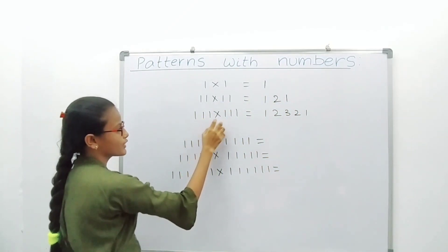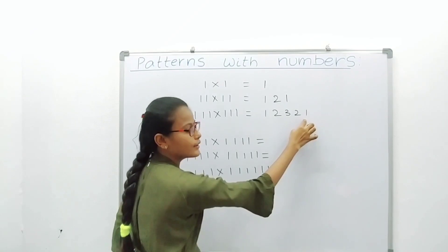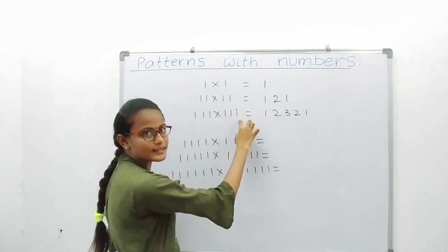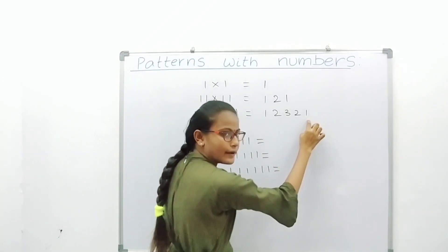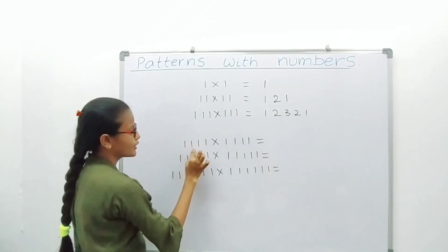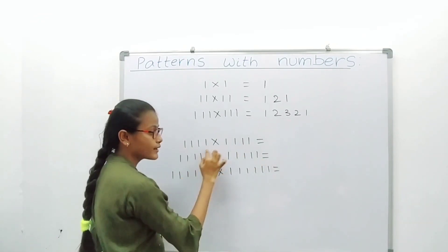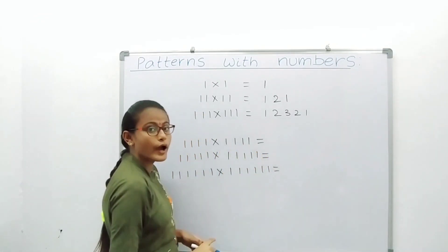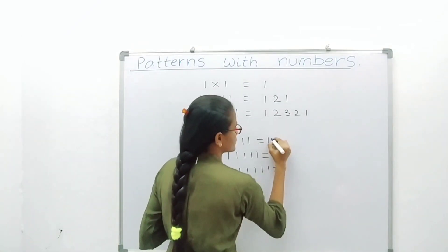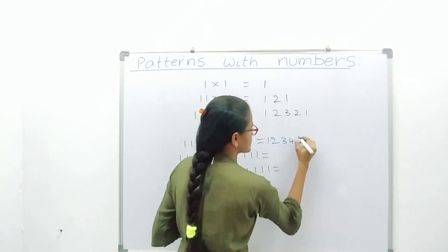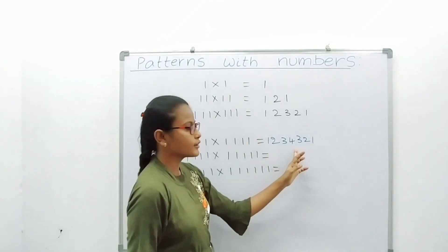111 into 111 equals 12321 — here 3 ones into 3 ones, so you increase up to 3 and decrease to 1. 1111 into 1111 — here 4 ones into 4 ones, so you increase to 4 and decrease to 1. The answer is 1234321.